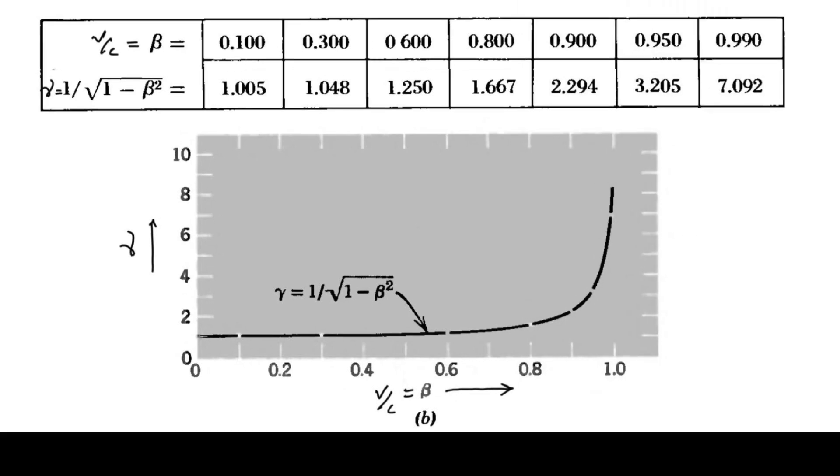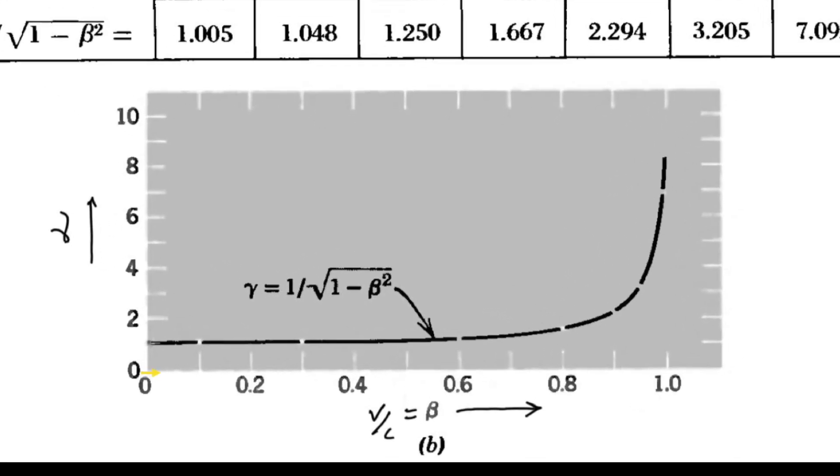Whose speed or velocity are we talking about? Depends on the perspective we choose to go with. From the object's perspective, it is the velocity of a moving object. It's relative, right?